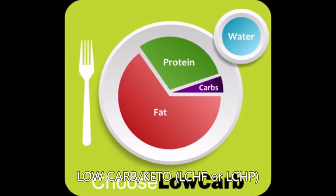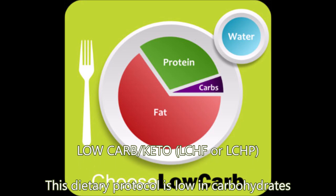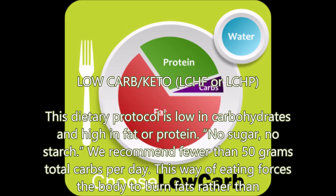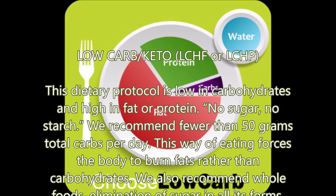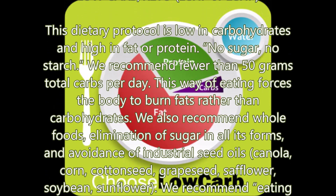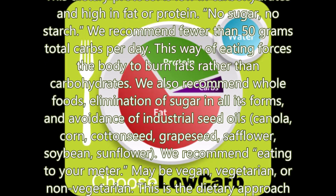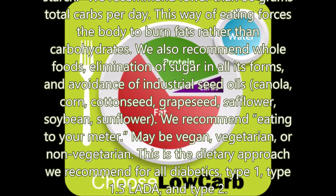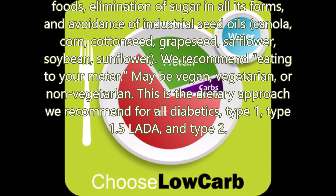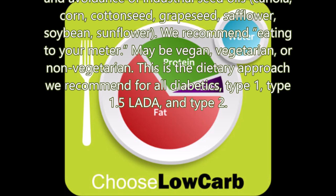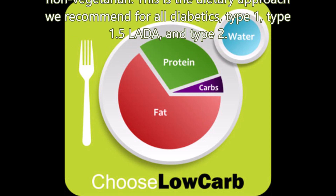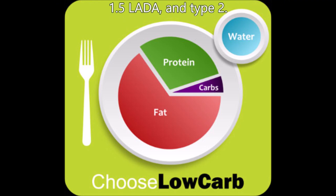Low-Carb Keto (LCHF or LCHP): This dietary protocol is low in carbohydrates and high in fat or protein. No sugar, no starch. We recommend fewer than 50 grams total carbs per day. This way of eating forces the body to burn fats rather than carbohydrates. We also recommend whole foods, elimination of sugar in all its forms, and avoidance of industrial seed oils — canola, corn, cottonseed, grapeseed, safflower, soybean, sunflower. We recommend eating to your meter. May be vegan, vegetarian, or non-vegetarian. This is the dietary approach we recommend for all diabetics: type 1, type 1.5 LADA, and type 2.